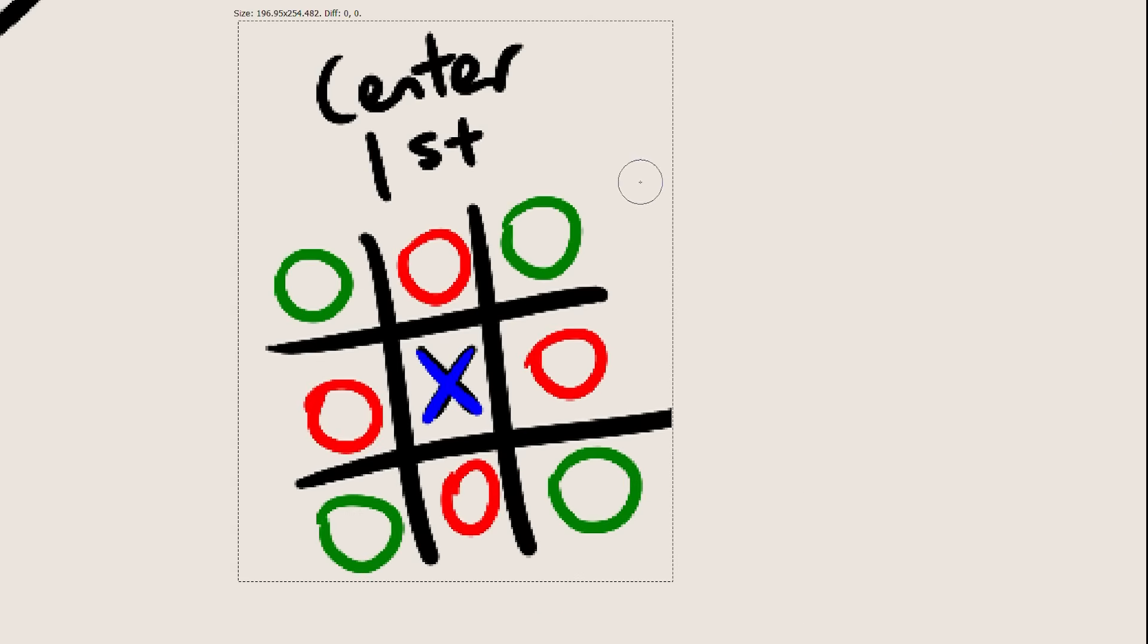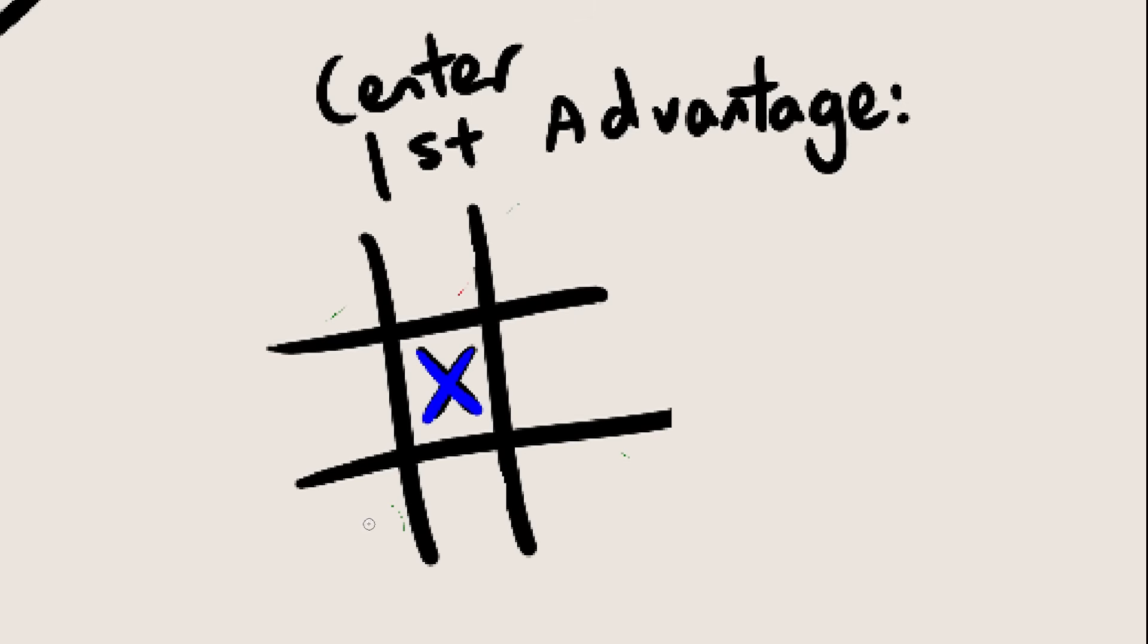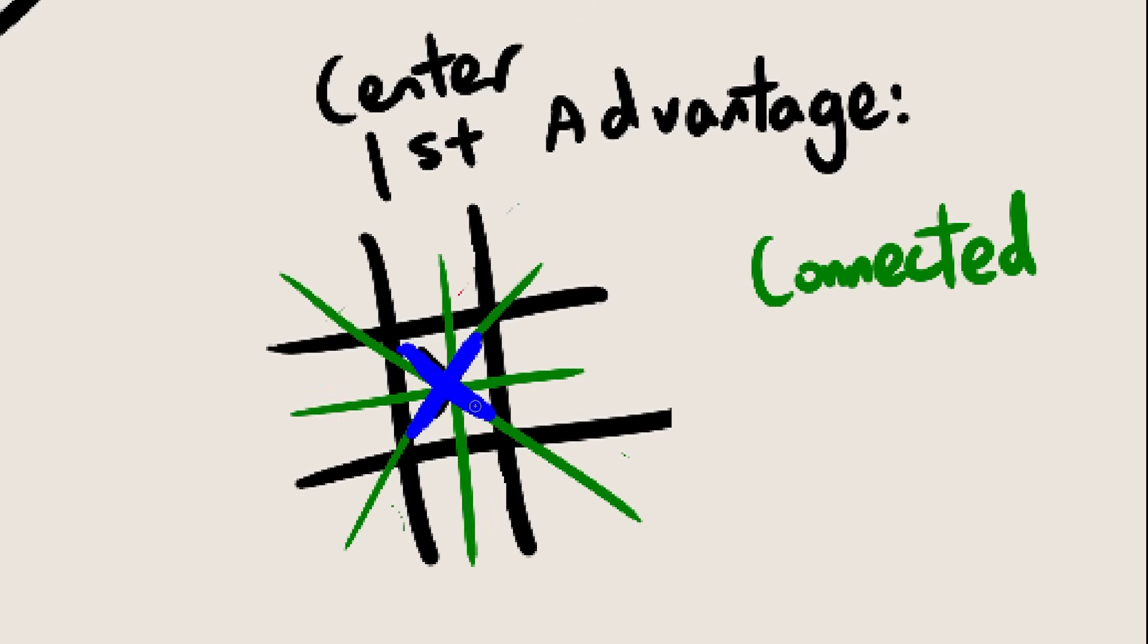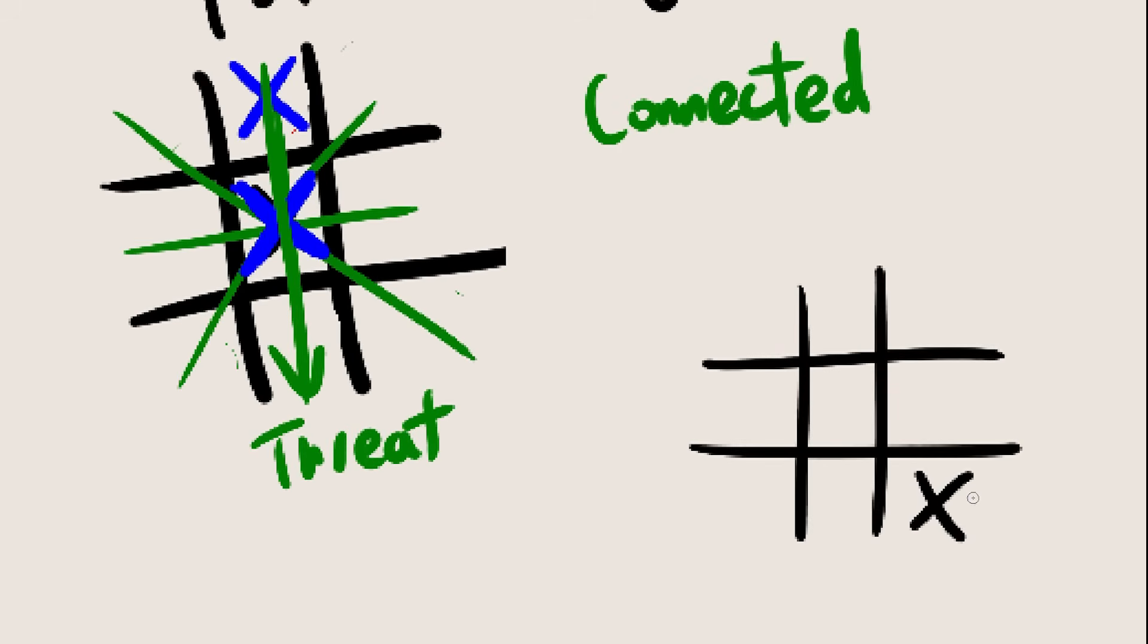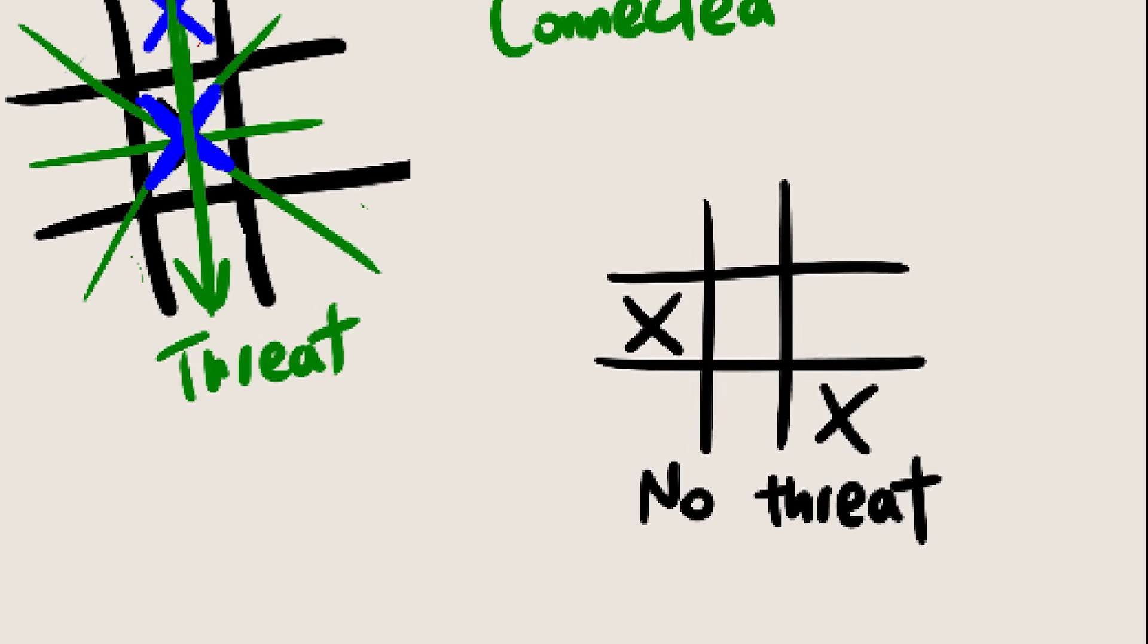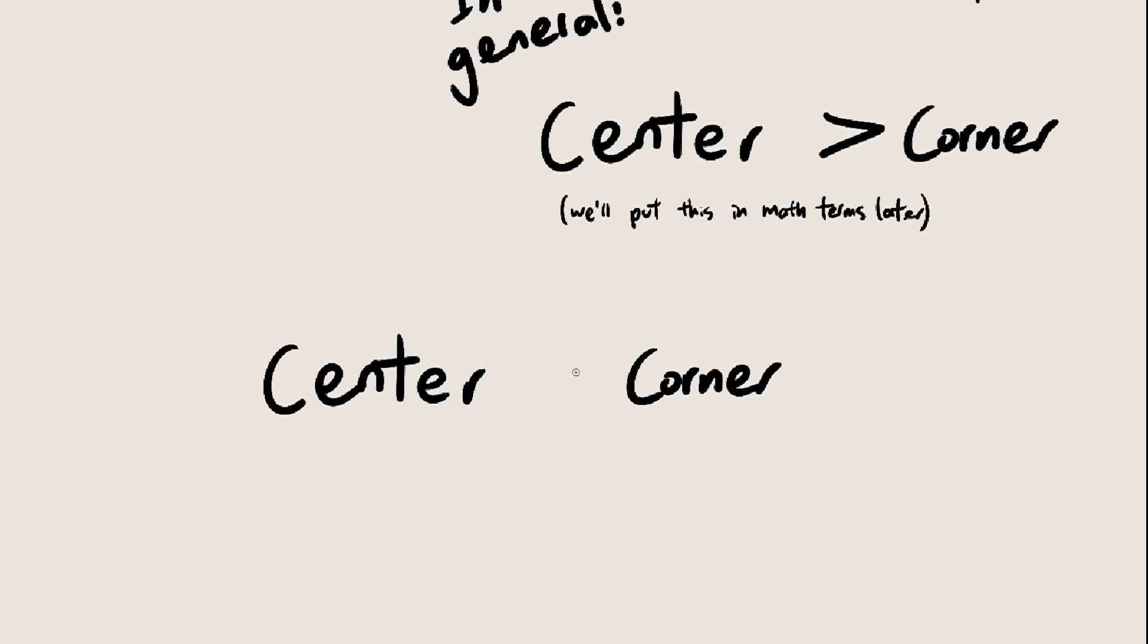But center first does have one thing going for it that becomes even more advantageous in 3D tic-tac-toe. Notice how every square is connected to the center. So if we control the center, no matter which square we take, we will always be creating a threat. This isn't true for the corner, because you could place an X here and nothing will happen, no threats have been made. So, generally speaking, the center is a more valuable square than the corner. It just so happens that corner is better as a first move.